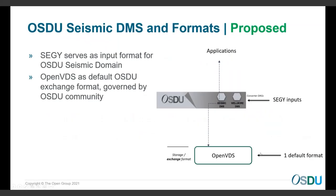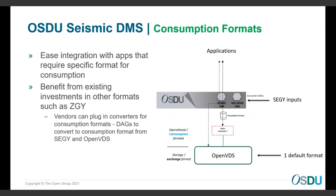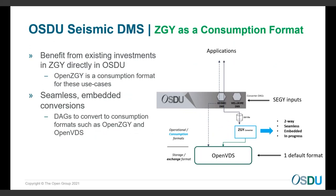What we'd like to propose is a single default storage and exchange format, and then introduce the concept of a consumption format — a format that allows the application to work in its most efficient manner. In our case, that consumption format would be open ZGY. So what you would have is an open ZGY converter which would be two-way, seamless, embedded within our applications, and would allow open ZGY work to convert to open VDS for exchange or for storage, and vice versa.